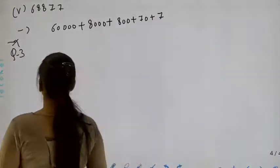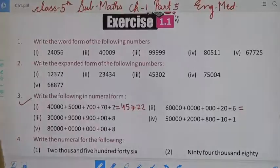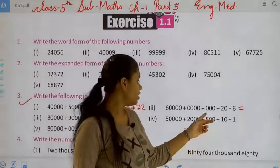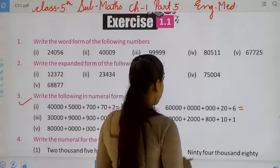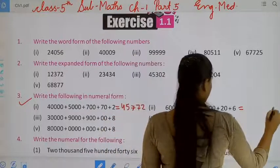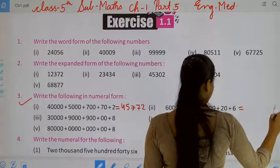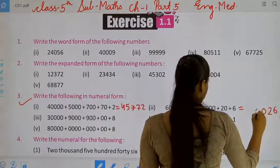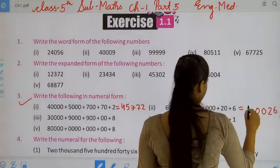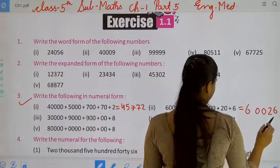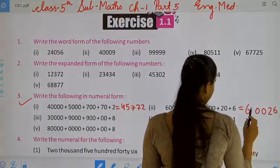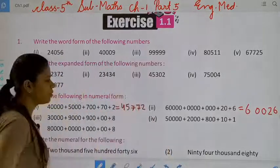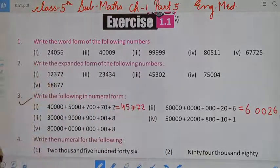Now move to the next — ones, tens, hundred, thousand, and ten thousand. Once we place the digits, it will be sixty thousand, twenty-six.